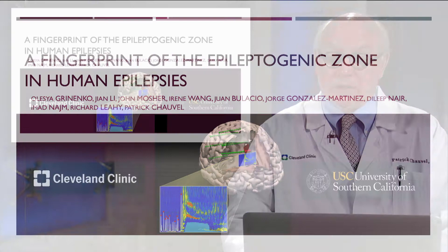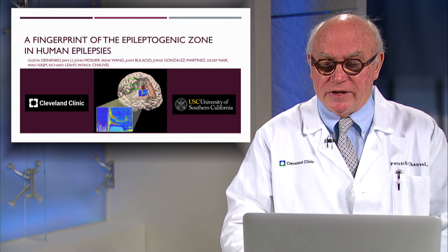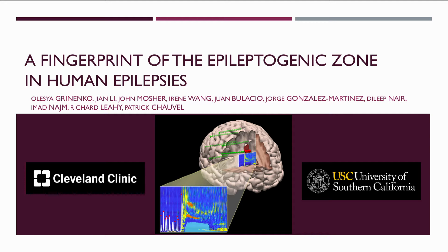We have identified a fingerprint of the epileptogenic zone in human epilepsies. The main objective of presurgical investigation in epilepsy surgery is to localize the epileptogenic zone, whose resection will lead to seizure freedom. In complex epilepsies, especially when MRI is negative, intracranial recordings are needed.